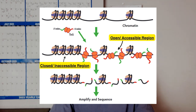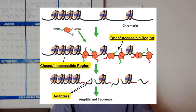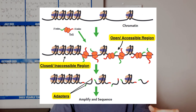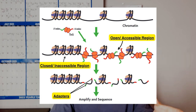As the TN5 transposase makes its incisions, it simultaneously integrates sequencing adapters into the DNA at these cut sites. These adapters mark the regions of interest and prep the fragments for the next steps, which are amplification and sequencing.